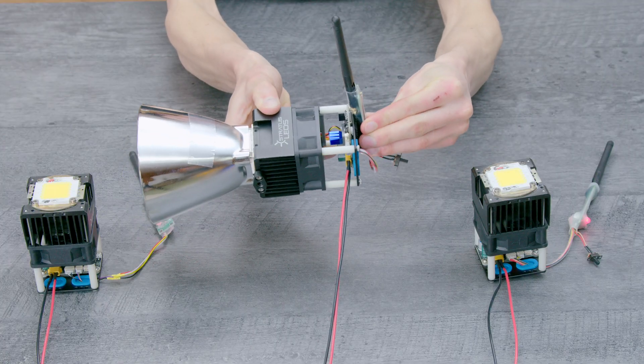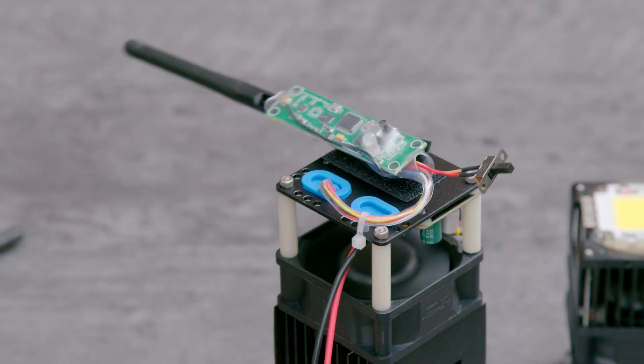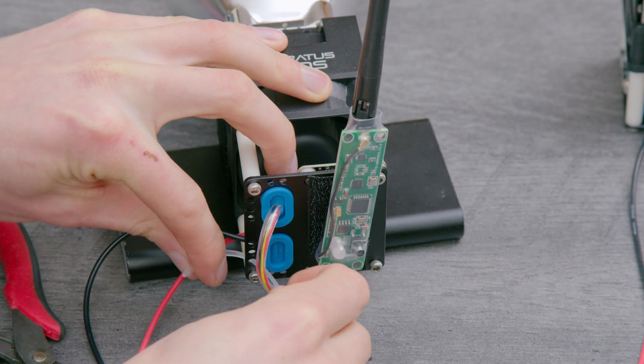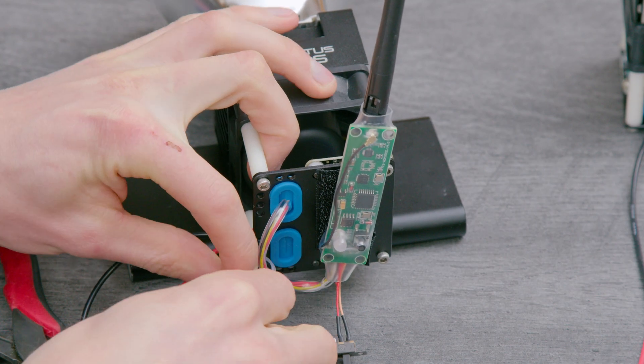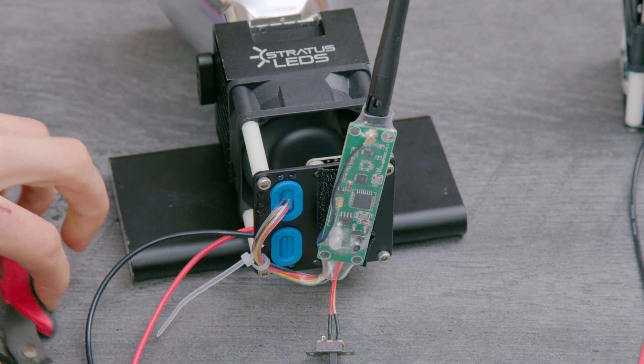For easy mounting to the air module, the transceiver can be Velcroed to the back. To protect the GH connectors, the cable can be strain relieved by zip tying it to the holes in the aluminum plate.